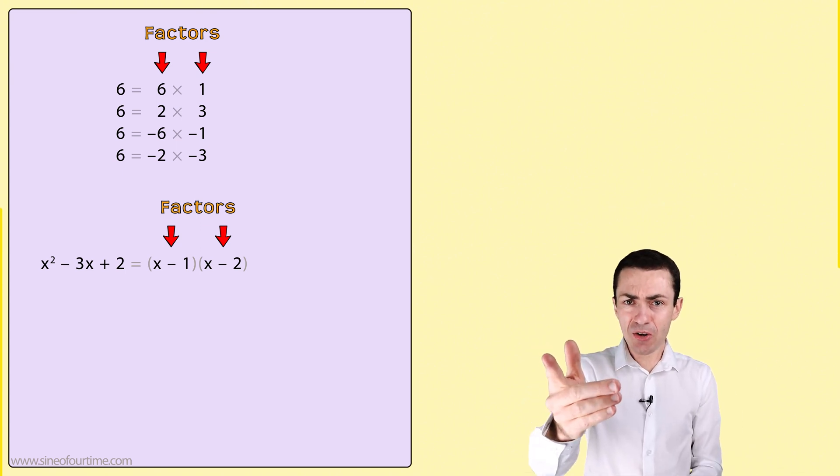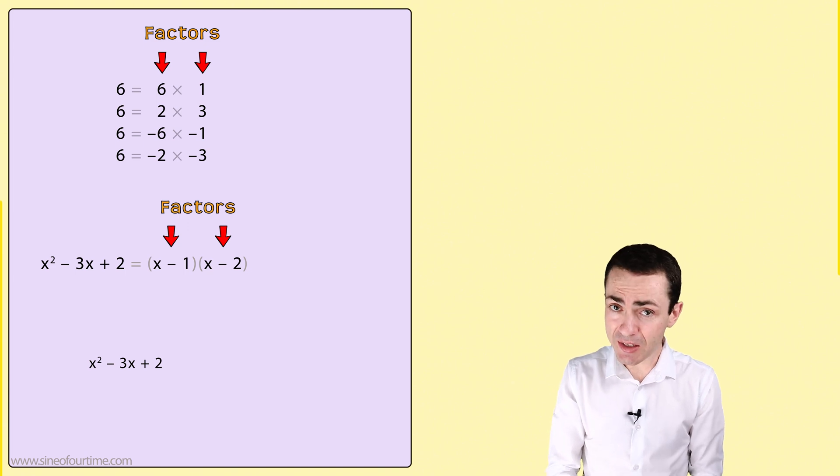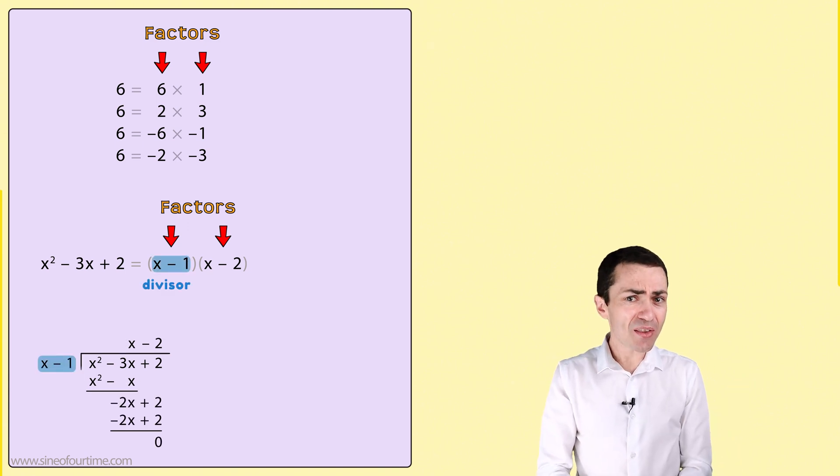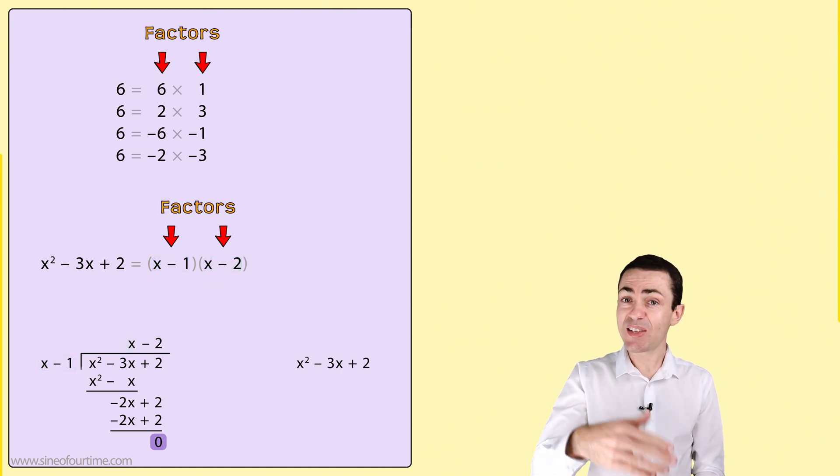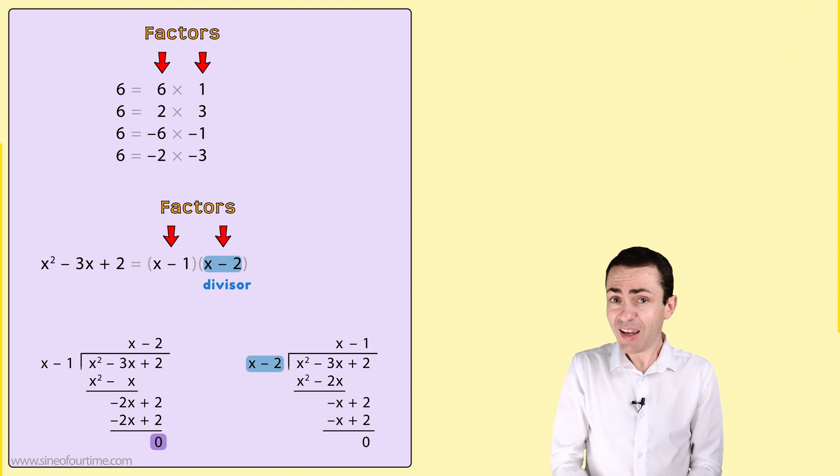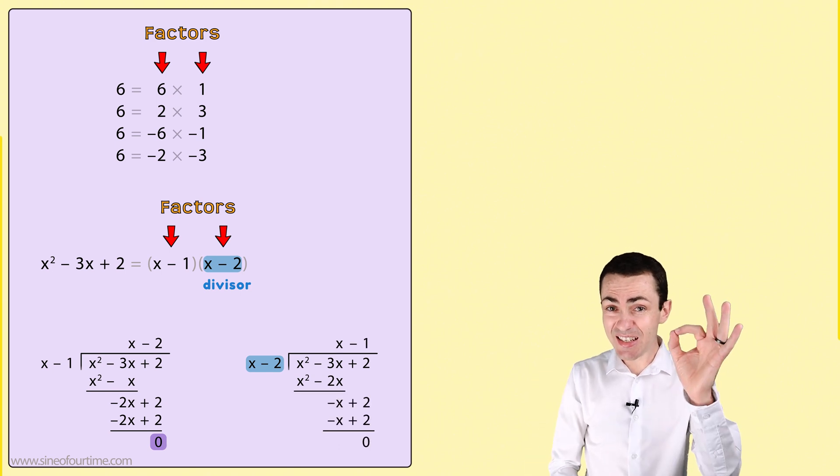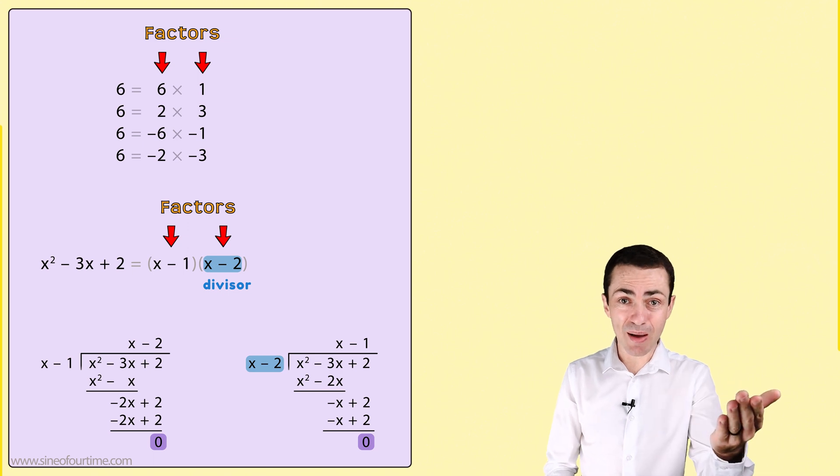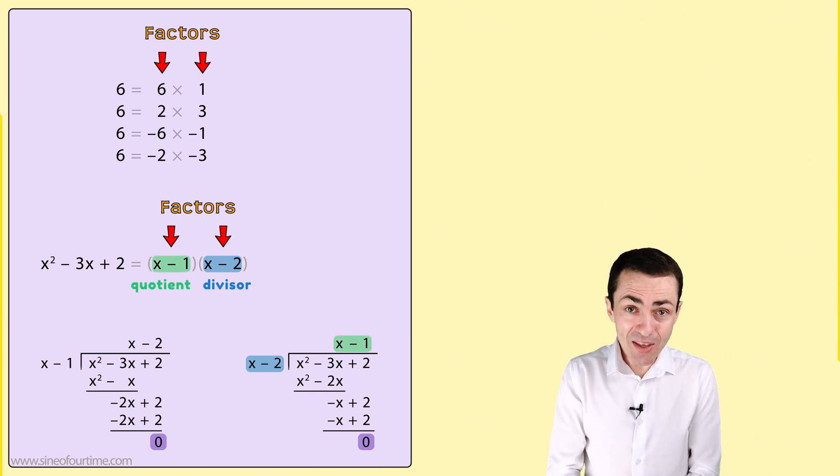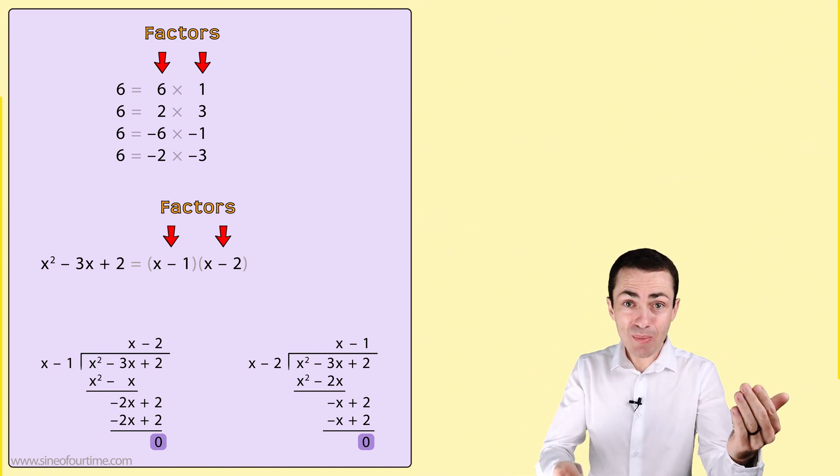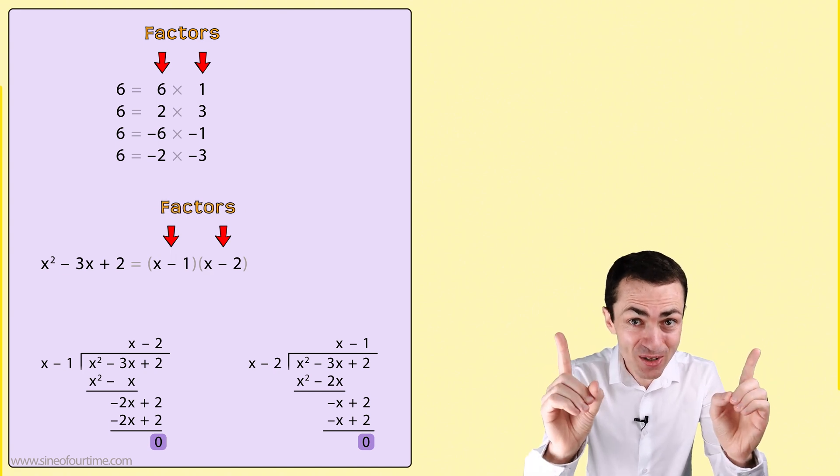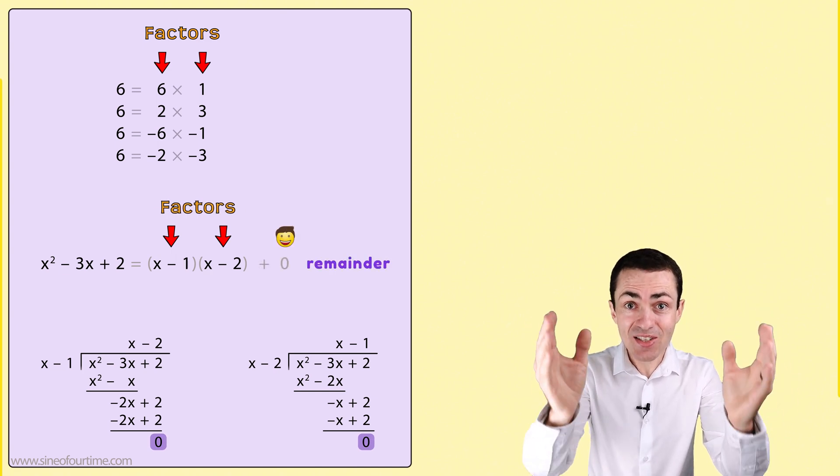Now if we take that trinomial and divide by the first factor of x minus 1, we notice that the remainder is 0 while the quotient is x minus 2, the second factor. And if we take that same trinomial and divide by the second factor of x minus 2, again we notice that the remainder is 0 while the quotient is x minus 1, the first factor. In other words, and this is really important, x minus 1 and x minus 2 are only factors because the remainder is 0.